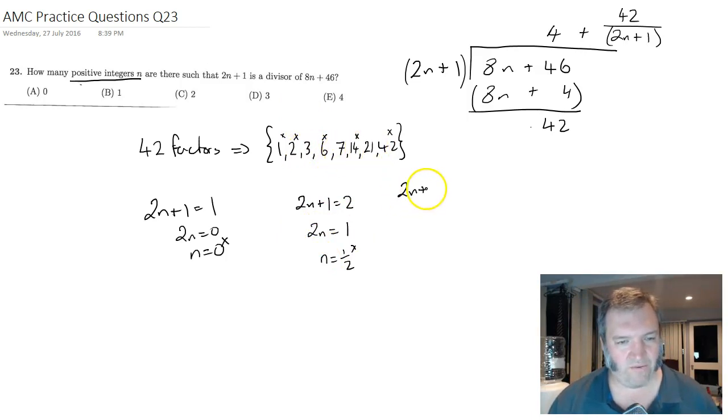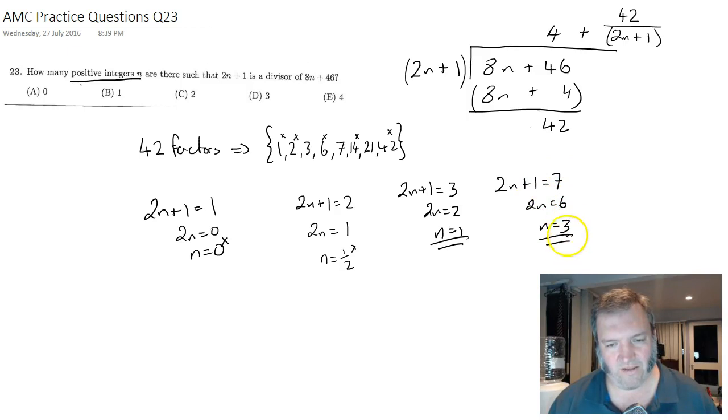What would it be if 2n plus 1 equals 3? Well, that gives me 2n equals 2. n equals 1. Now, you're probably already satisfied that it's going to work in these three cases, but let's just finish it off. 2n plus 1 equals 7. That means 2n is going to equal 6. n equals 3 would be another solution.